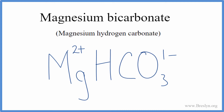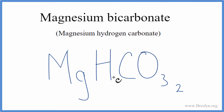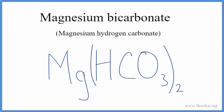We use something called the crisscross method — we'll move the one here and the two over here. By convention we don't write the one, so we remove it, and then we need to put parentheses around the hydrogen carbonate ion since it's a polyatomic ion and we have two of them. So we'll put our parentheses, and that's the formula for magnesium bicarbonate.